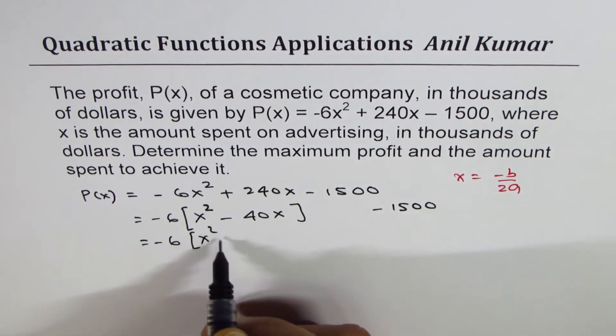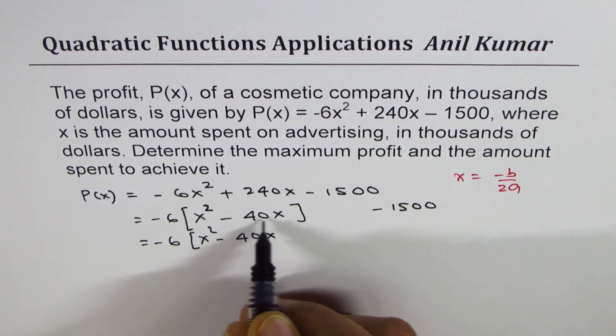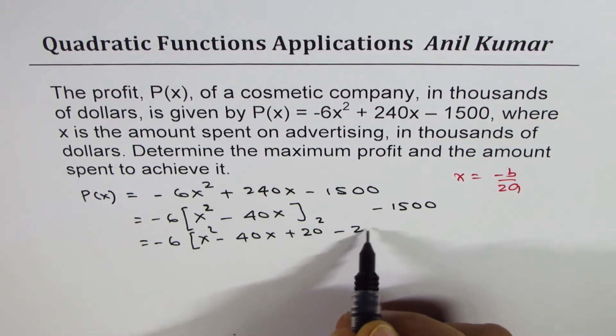-6(x² - 40x). Half of 40 is 20. Add and subtract 20 square.